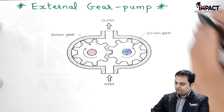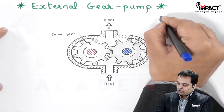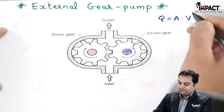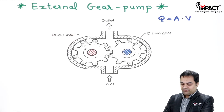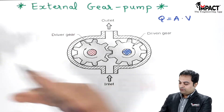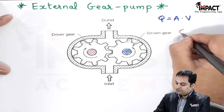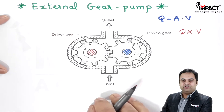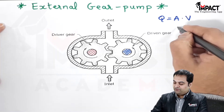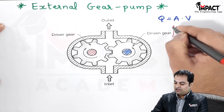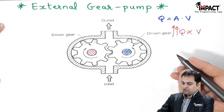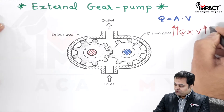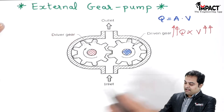The reason for such high speed is that we can get a huge amount of discharge. From the continuity equation, Q (discharge) equals area multiplied by velocity. Since discharge is directly proportional to velocity, and pumps are high-discharge machines, we need to increase the velocity of the pump — that is why they rotate at very high speed.